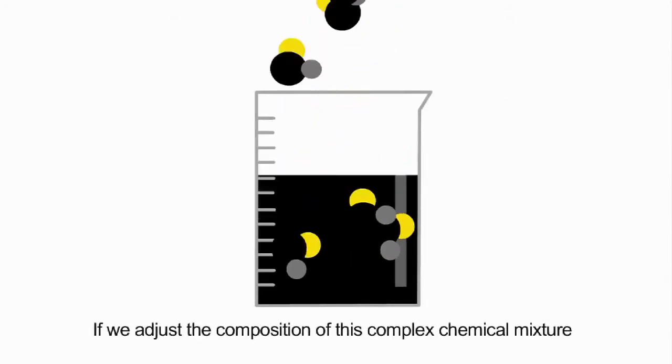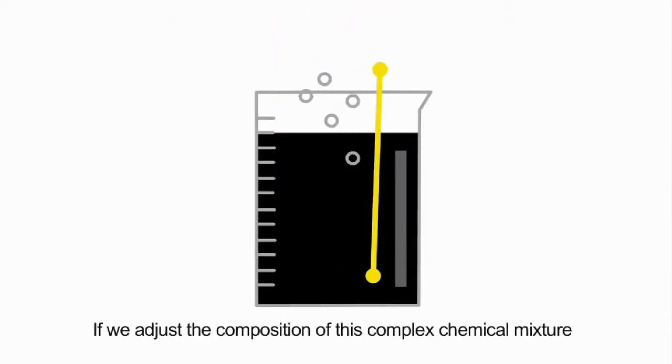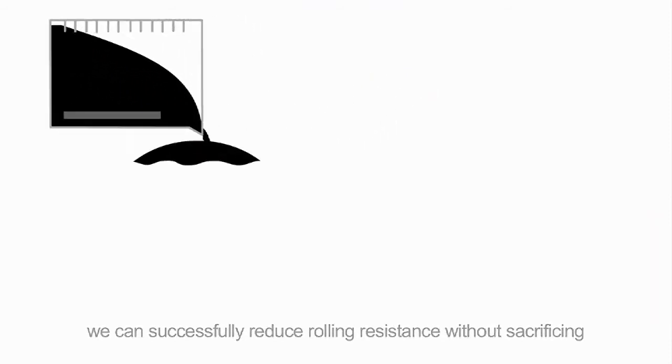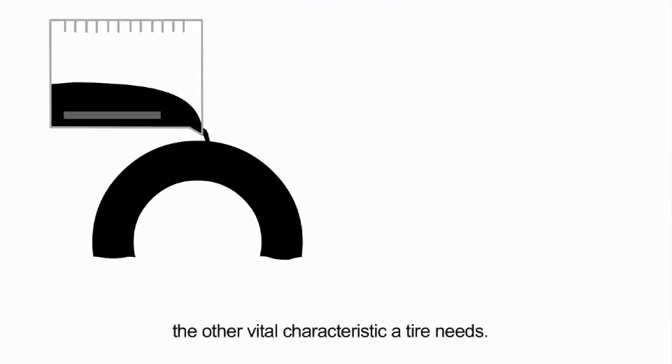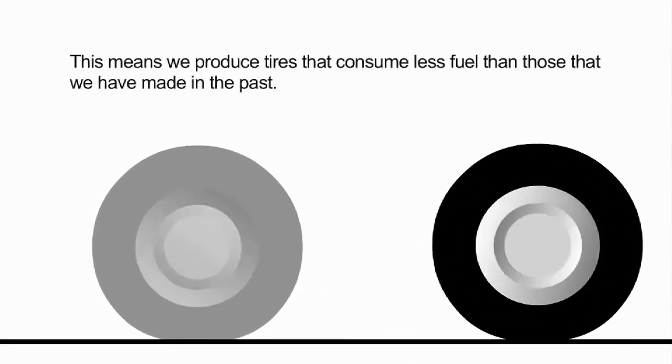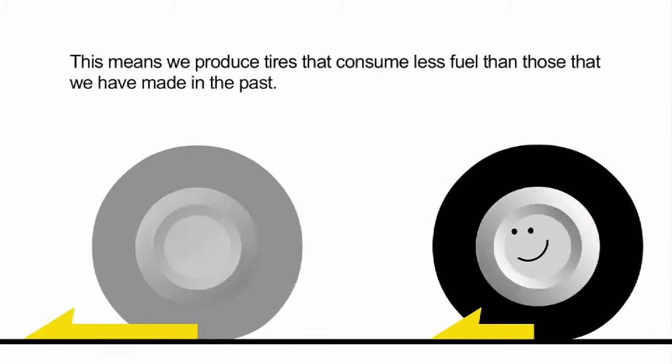If we adjust the composition of this complex chemical mixture, we can successfully reduce rolling resistance without sacrificing the other vital characteristics a tire needs. This means we produce tires that consume less fuel than those that we have made in the past.